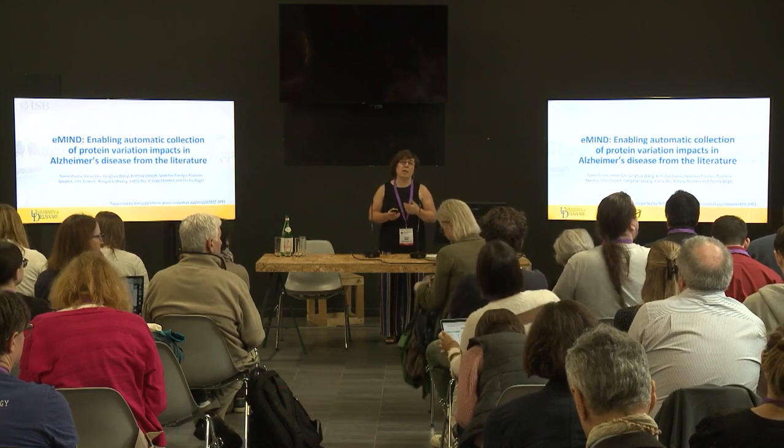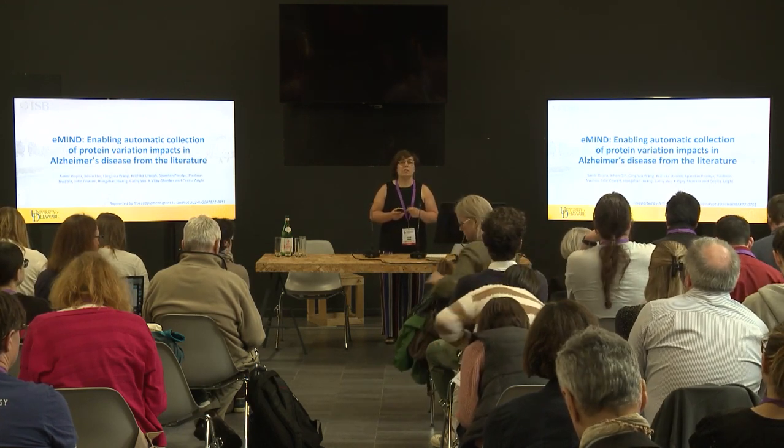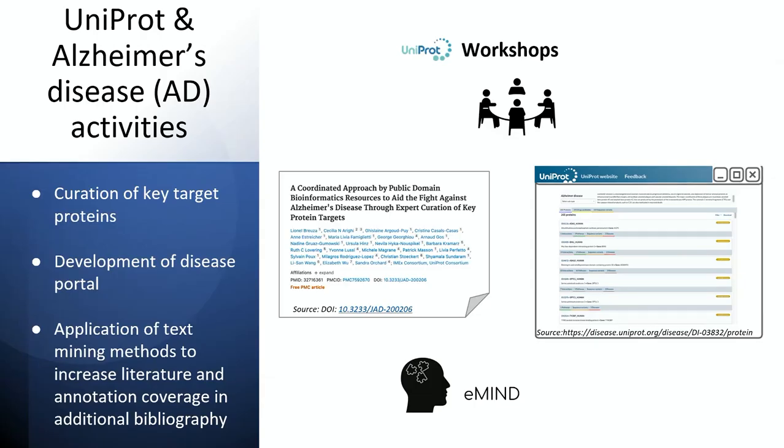This is a work in collaboration with my colleagues at the University of Delaware and Georgetown University, funded by an NIA supplement to UniProt. In the context of UniProt, UniProt has been awarded a number of supplements to deal with Alzheimer's activities. We run workshops, work with the community to identify targets for curation, and have a disease portal. The last part of the supplement involved using text mining to increase the literature about Alzheimer's disease, and that's where eMind comes into play.